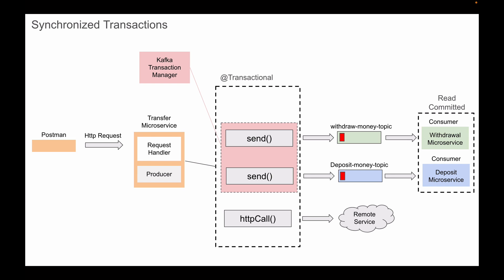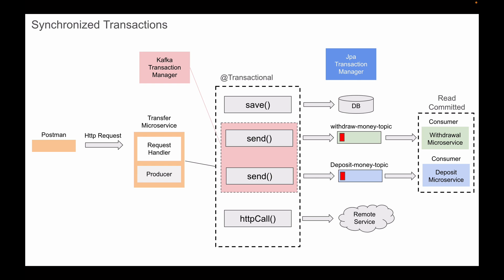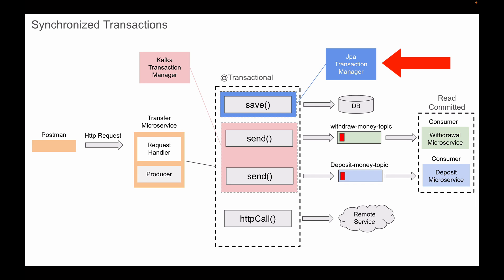Until this point, you have seen how it all works in the previous section of the course. In this section, we will make this method save information to a database table. For this operation to be transactional, we will create a JPA transaction manager. So in this section of the course, we will have two transaction managers — one called the Kafka transaction manager and another called the JPA transaction manager.